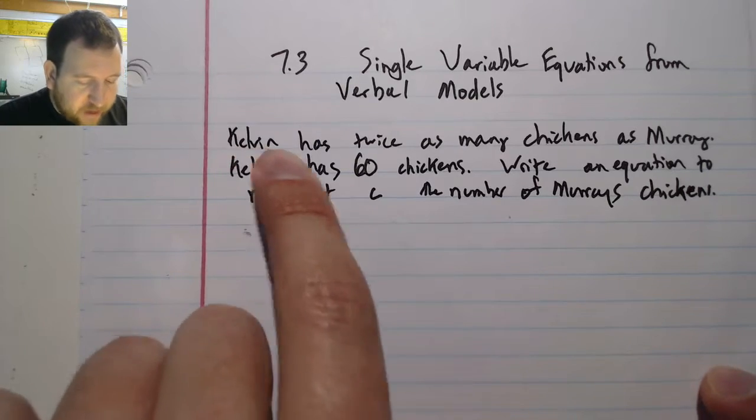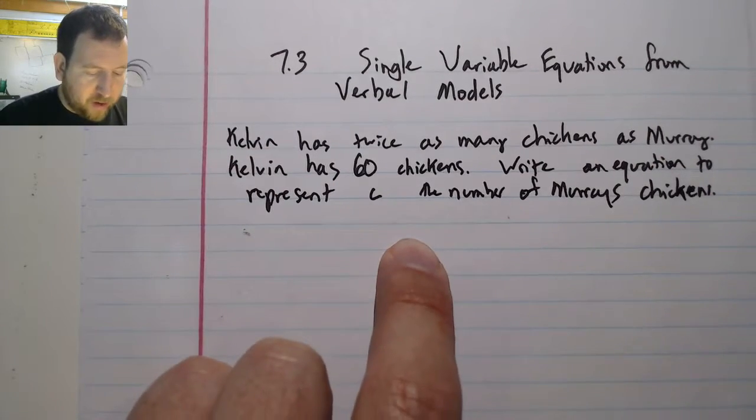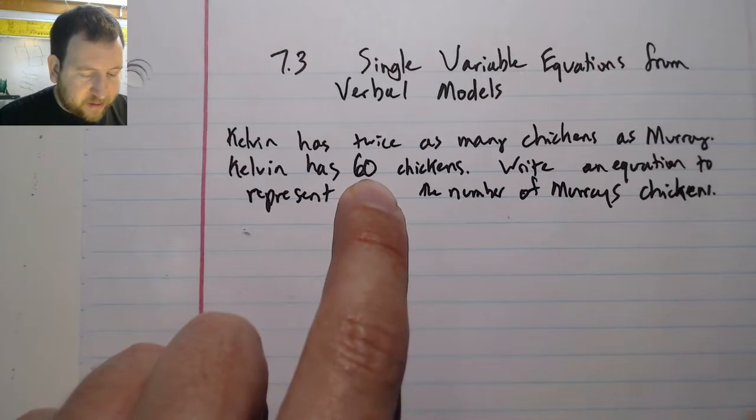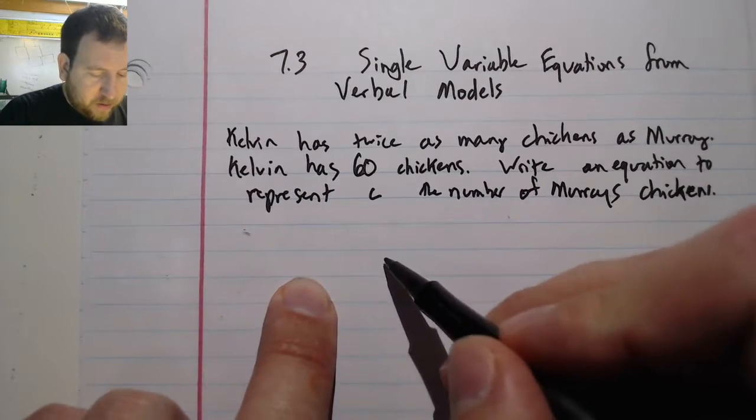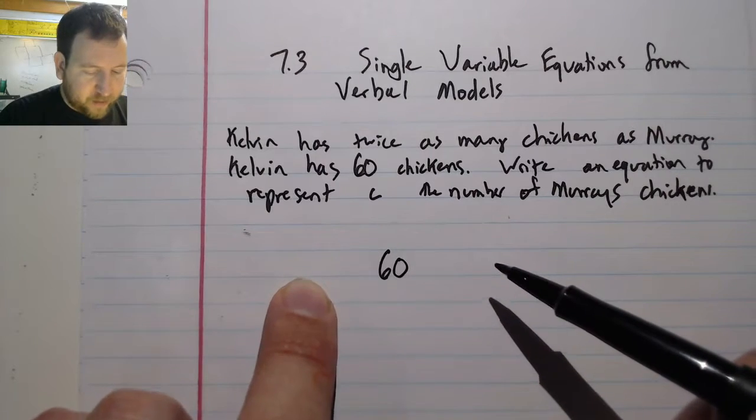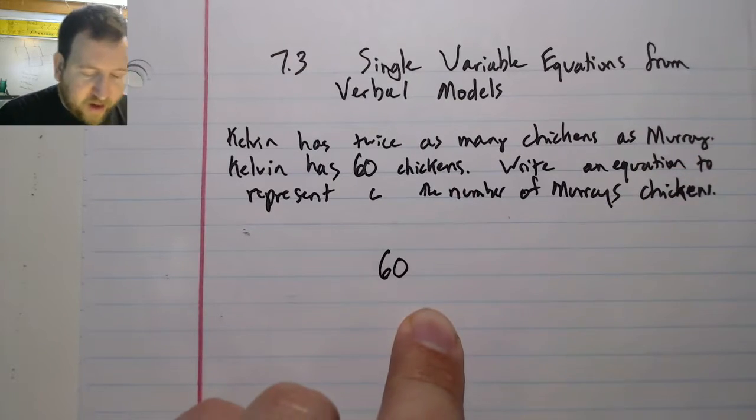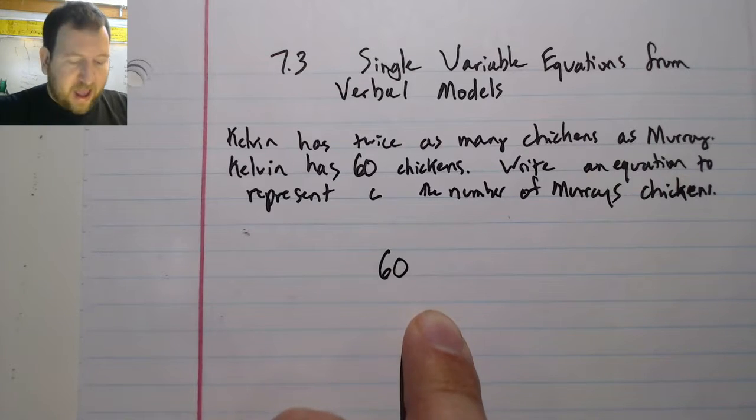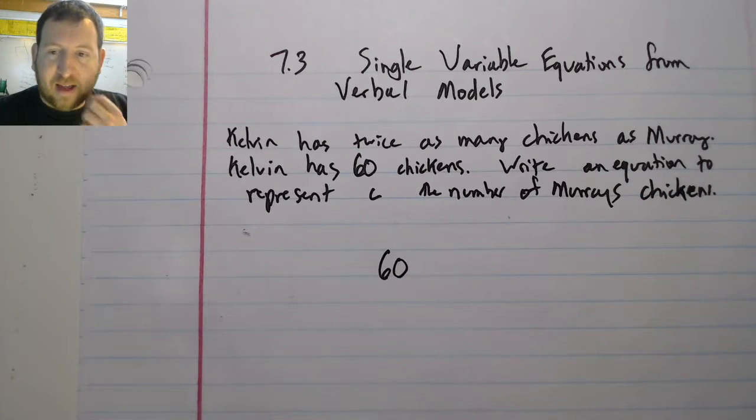So I have Kelvin has twice as many chickens as Murray. And I know Kelvin has 60 chickens. So I can use that 60 chickens that I know Kelvin has. And I know he has twice as many chickens as Murray. So Murray should have half as many as he does.